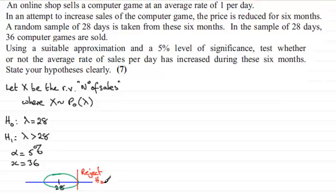So just going to write that in there. There's two ways that we can approach this type of problem: we can either work out what the probability is of getting more than 36, and if that is less than five percent, then we would reject the null hypothesis.